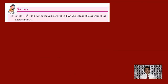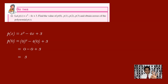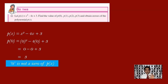Now let us have a look at this problem. Let p of x is equal to x square minus 4x plus 3. Find the value of p of 0, p of 1, p of 2, p of 3, and obtain the zeros of the polynomial p of x. We need to find the value of x for which the polynomial value becomes 0. Let us find p of 0 first. Wherever there is x, you have to write 0. So this becomes 0 square minus 4 of 0 plus 3. 0 square is 0, 4 zeros are 0, so the first two terms are 0, plus 3. So we have got p of 0 is 3.